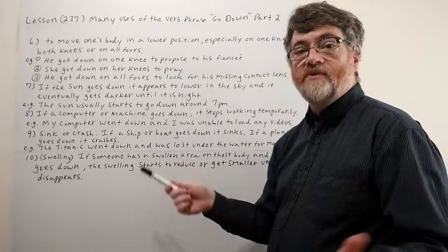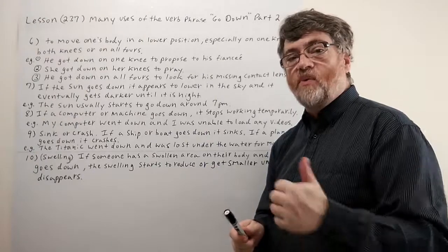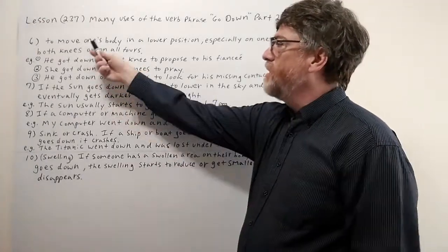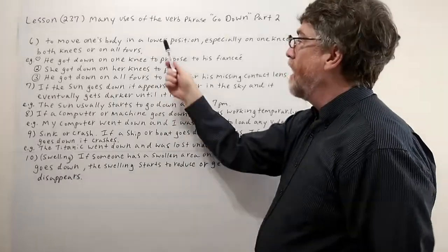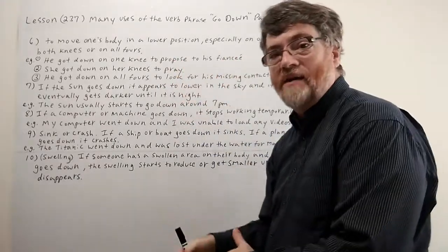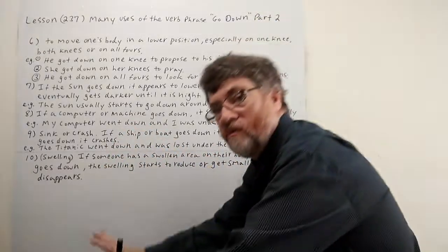Let's look at the first one we have today. The first one is actually number six because in the first video we covered number one through five. To go down could mean to move one's body in a lower position, especially on one knee, both knees, or all fours.